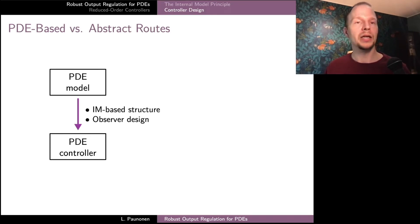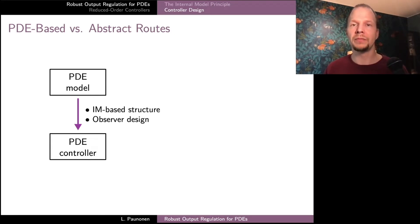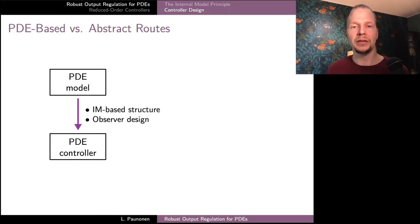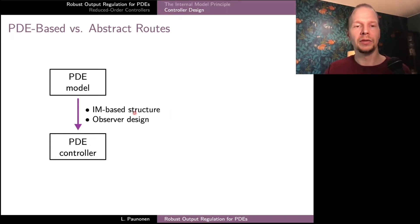This division for PDE-based and abstract control design is very general and can be applied to many different control problems. In the PDE-based approach, we start with our PDE model, figure out what kind of internal model we need and what structure for the controller would guarantee this. We then add a PDE-based observer design so that the closed loop achieves stability, arriving at a PDE controller which solves the robust output regulation problem.